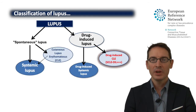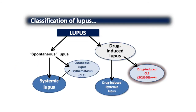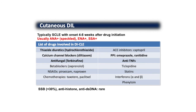Now the heart of the presentation: the list of drugs. There are two different lists — one for cutaneous-only drug-induced lupus. Most patients will have positive anti-nuclear antibodies and positive anti-SSA antibodies in a large majority of cases. The drugs to note for cutaneous DEAL include thiazide diuretics, calcium channel blockers, antifungal therapies such as terbinafine, proton pump inhibitors such as omeprazole, and anti-TNF agents.